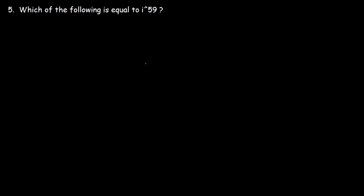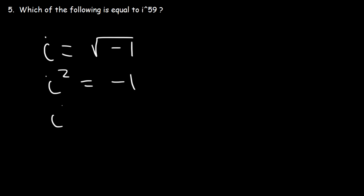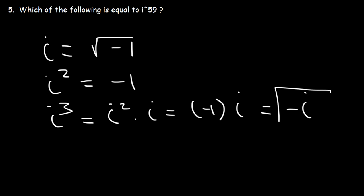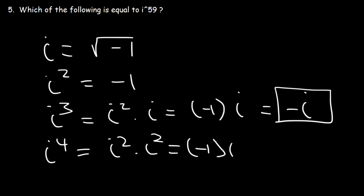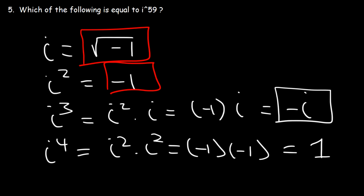Keep this in mind: i equals the square root of negative 1. i squared is negative 1. i cubed is i squared times i; since i squared is negative 1, negative 1 times i is negative i, so i cubed is negative i. i to the 4th is i squared times i squared, which is negative 1 times negative 1, and that's positive 1. Make sure you know these four values.